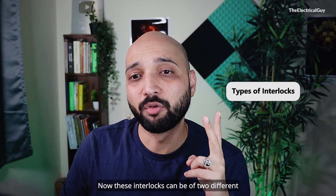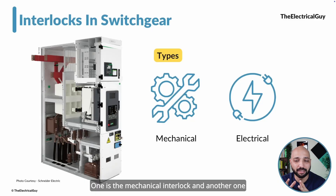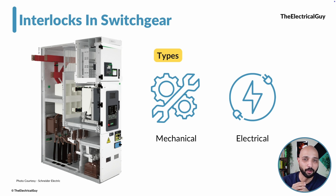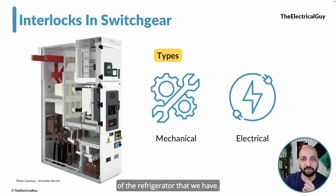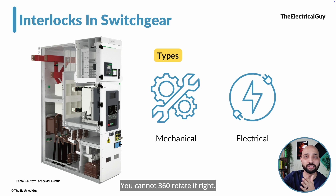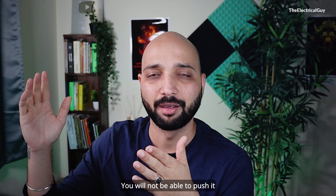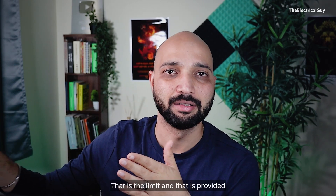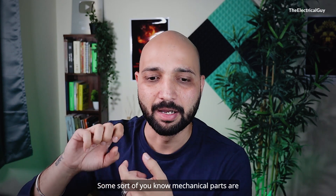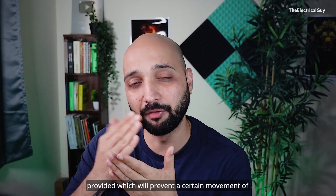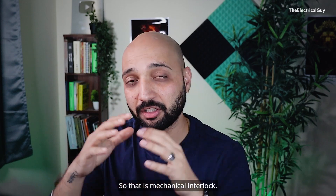These interlocks can be of two different types: mechanical interlocks and electrical interlocks. Mechanical interlocks are pretty common, not only in switchgear but everywhere. Take the example of a refrigerator door — you can only open it to a certain degree, you cannot rotate it 360 degrees. You open it to the limit and it gets stuck. That limit is provided by a mechanical interlock — some mechanical parts are provided which prevent a certain movement.